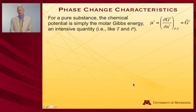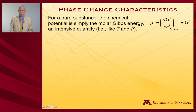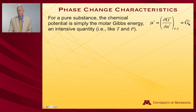For a pure substance undergoing a phase change, the chemical potential is the change in free energy with respect to the change in moles. Going from zero moles to one mole takes you from no free energy to the free energy of one mole of the pure substance. So the chemical potential is simply the molar Gibbs free energy.